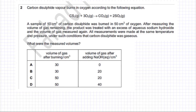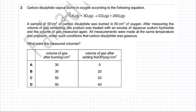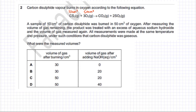This moles question is related to gas volumes. Carbon disulfide vapor burns in oxygen according to the following balanced equation for complete combustion of CS₂. The question states that a sample of 10 cm³ of carbon disulfide burns in 50 cm³ of oxygen, and after measuring the volume of gas remaining, the product is treated with an excess of aqueous NaOH.